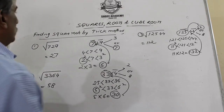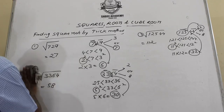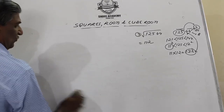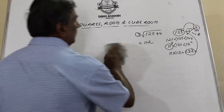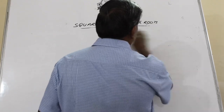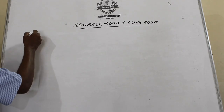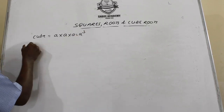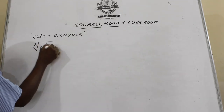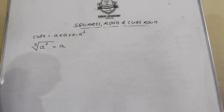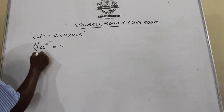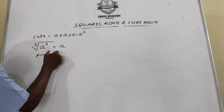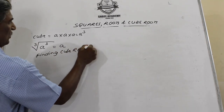Now we move on to cube roots. What is a cube? A cube is the number obtained when you multiply the same number three times: a × a × a = a³. If we want to find the cube root of a³, the answer is a. Cube roots may seem difficult with big numbers, but if you use the trick method I'm going to teach, things will become very easy.